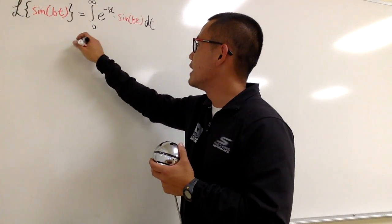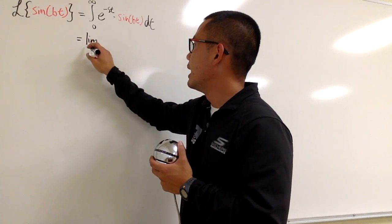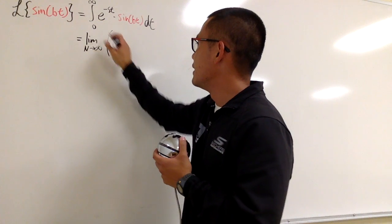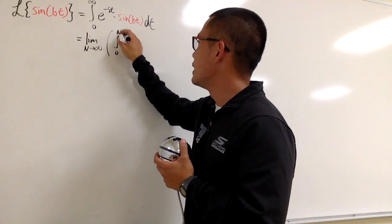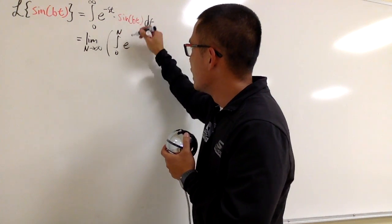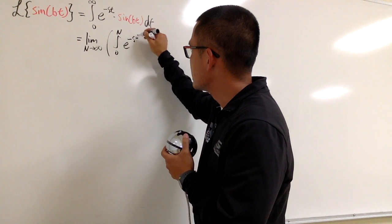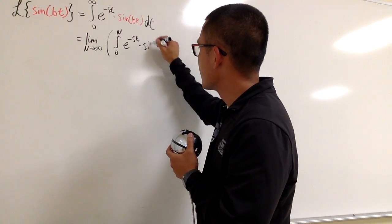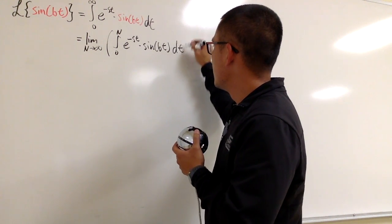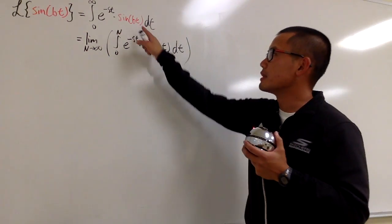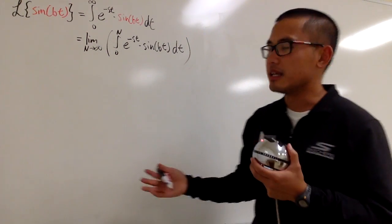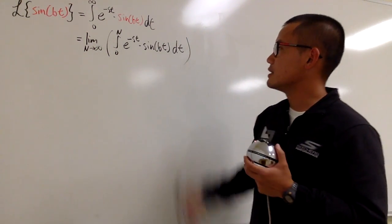Let me first write this down as the limit as n goes to infinity, and then this is the integral from 0 to n of e to the negative st times sine of bt. As a reminder, remember that b is just a number — you can think about b as, like, 6 if you would like.